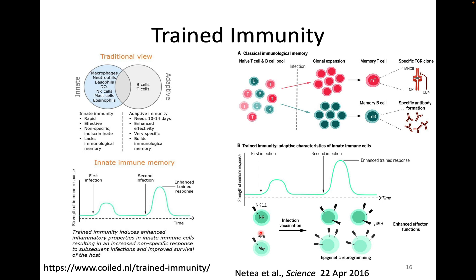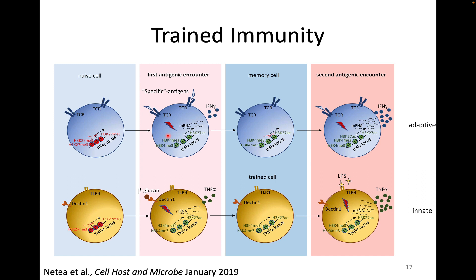There are also some macrophages that can make what are known as trained responses. All of these responses have to do with epigenetic changes — changes at the level of the chromatin structure. Here, we're not holding memory through a specific clone of cells with a specific receptor. Instead, the cell doesn't have a specific receptor but holds on to the experience at the chromatin level. This newer area has been pioneered largely by Mikhail Netea.